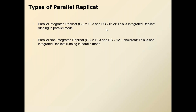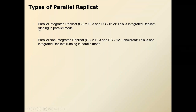If your database version is 11.2.0.4, you cannot use parallel replicate. The minimum database version to use parallel replicate is 12.1. For database version 12.1, you can use parallel non-integrated replicate but not parallel integrated replicate. For database version 12.2, you can use parallel integrated replicate. In any case, the Golden Gate version must be 12.3 minimum. For parallel non-integrated replicate: minimum database 12.1, Golden Gate 12.3. For parallel integrated replicate: minimum database 12.2, Golden Gate 12.3.